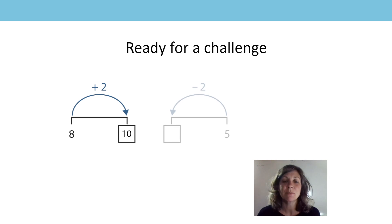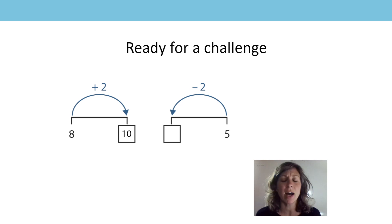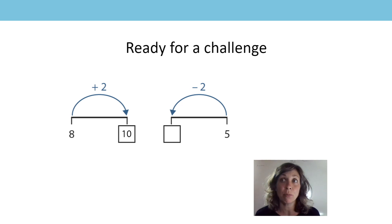That's correct. The next one — this is subtraction now and it's an odd number. So when I subtract 2 from an odd number I get the previous odd number, and the previous odd number is 3.